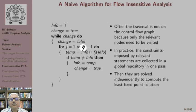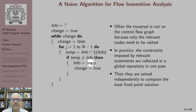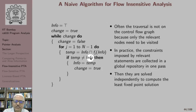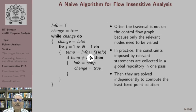In practice, flow-insensitive analysis is not performed like this. What is actually done is that constraints imposed by relevant statements are collected in a global repository in one pass, and in a second pass they are solved independently to compute the least fixed-point solution of the constraints. Because we are not storing information at each program point, we store less data and only worry about relevant statements — not the control flow — so flow-insensitive algorithms are often faster than their flow-sensitive variants.